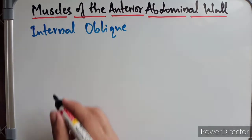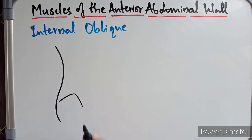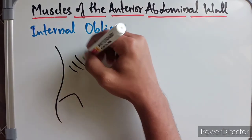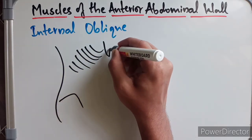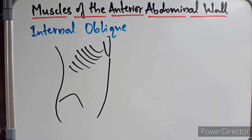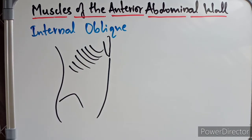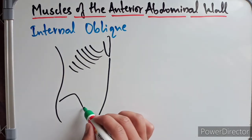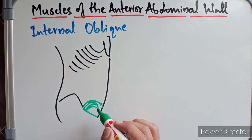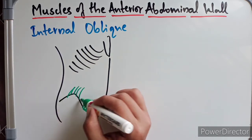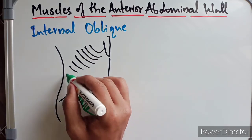The internal oblique muscle is relatively smaller and thinner than the external oblique. It lies deep to the external oblique and its fibers are oriented at right angles to those of the external oblique. It originates from three places: the lateral two-thirds of the upper surface of the inguinal ligament, the anterior two-thirds of the iliac crest, and the thoracolumbar fascia on the back.